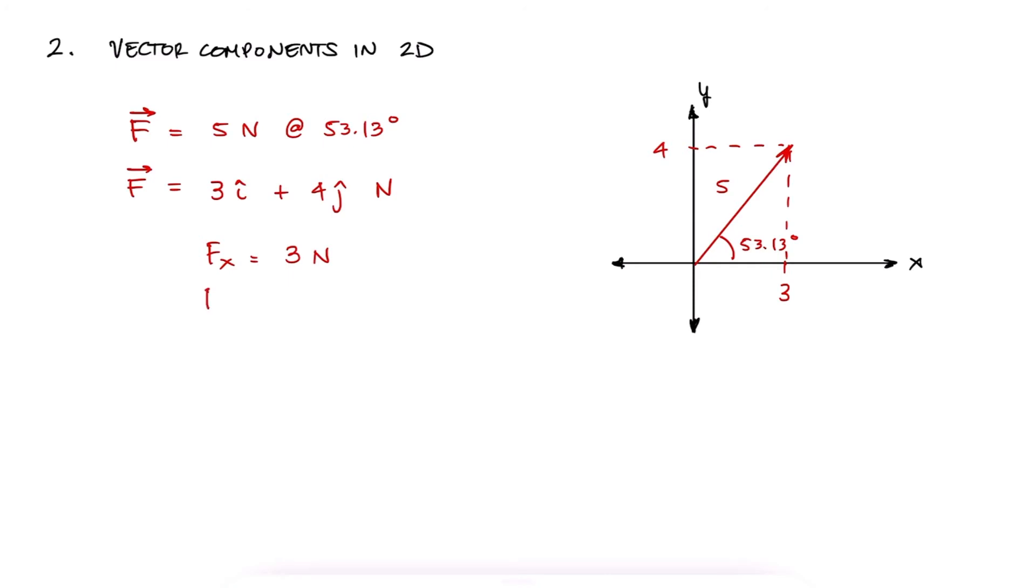So let's start with the 2D force vector f, 5 newtons in magnitude, at 53.13 degrees. This force vector can be written as 3i plus 4j newtons, or we can say that fx is 3 newtons, and fy is 4 newtons.